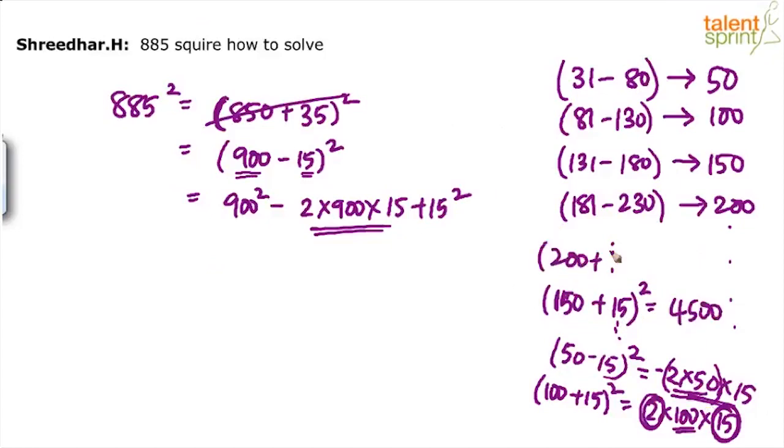Suppose it is 200 plus 15. Now 200 is 50 times 4. So 4 into 15 is 60. 60 into 100, 6000. Has to be added or subtracted depending on whether we have plus or minus here.